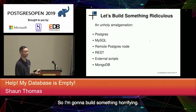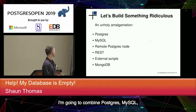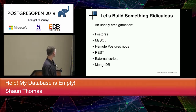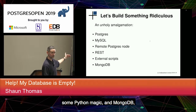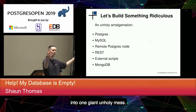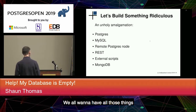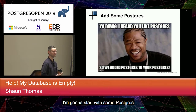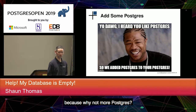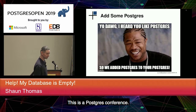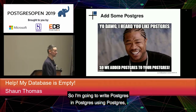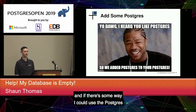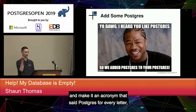So I'm going to build something horrifying — it's going to be an unholy amalgam on the level of Cthulhu. I'm going to combine Postgres, MySQL, another Postgres node, create a REST interface, combine some external scripts, some Python magic and MongoDB into one giant unholy mess, because why not? We all want to have all those things in a single database. This is a Postgres conference, so I'm going to write Postgres in Postgres using Postgres, and demo it with Postgres.